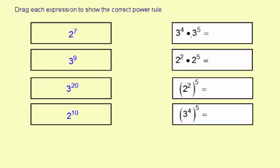Here you have the bases are the same and you're multiplying, so it's going to be 3 to the 4 plus 5th, or 3 to the 9th. So that one matches there.